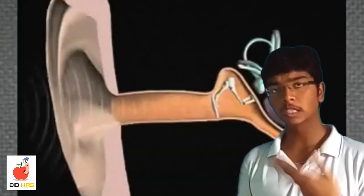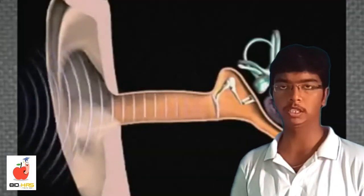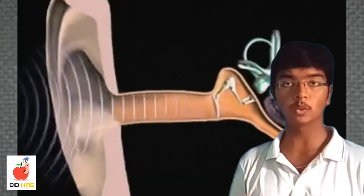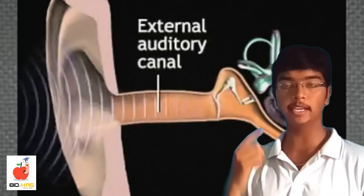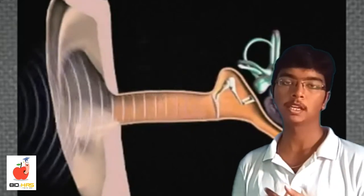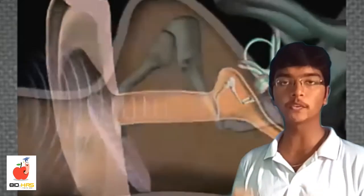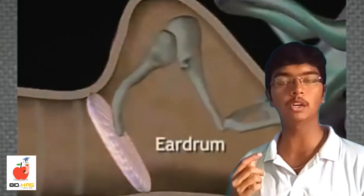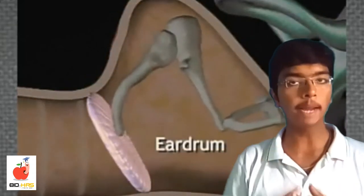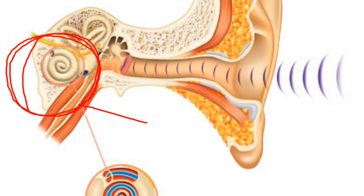Hearing. Sounds are made up of vibrations which will be funneled inside the ear by the outer ear. The sound waves first travel down the ear canal and vibrate the eardrum. This vibration will reach the cochlea and it will send messages to the brain, where the brain interprets those vibrations as a sound we recognize.